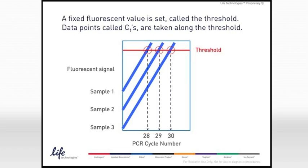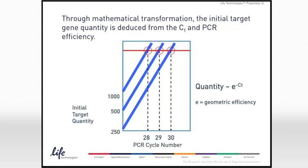A fixed fluorescent value called the threshold is set. Data points called CTs are taken along the threshold. Through mathematical transformation, the initial target quantity is deduced from the CT and PCR efficiency.